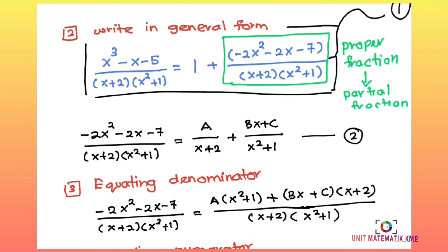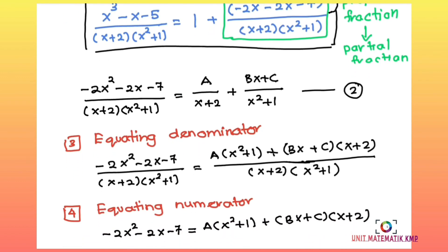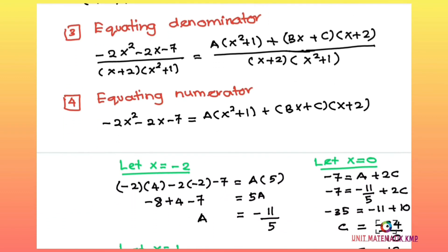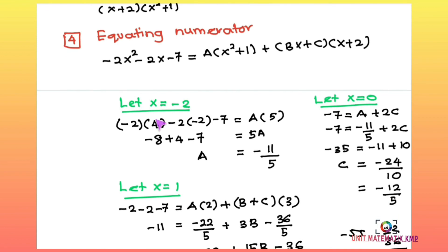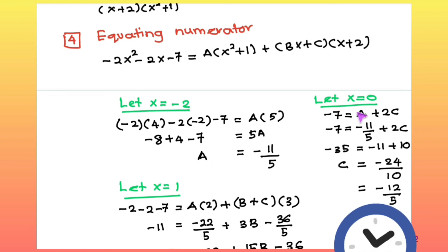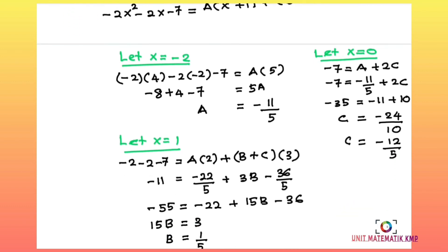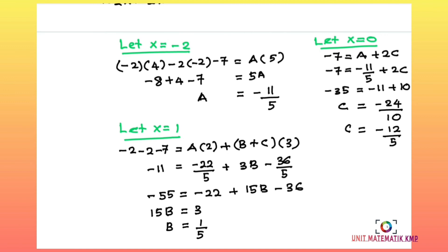We equate the denominators and then equate the numerators. To find A, B, and C, we use the substitution method. Substituting x = −2 gives the value of A. Substituting x = 0 gives the value of C. Substituting x = 1 gives the value of B, which equals 1/5.